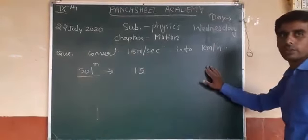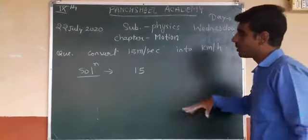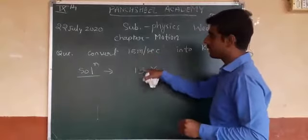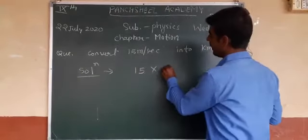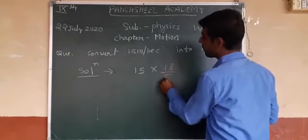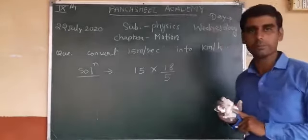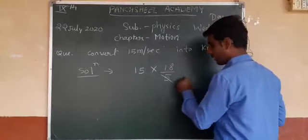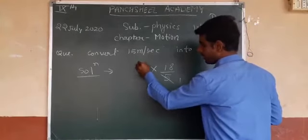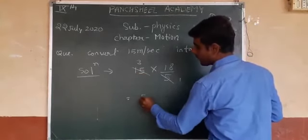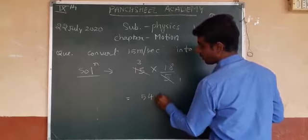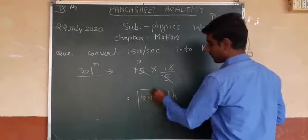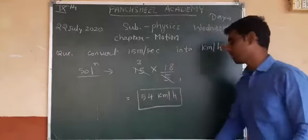So you must multiply 15 by 18/5. Simplifying: 15 multiplied by 18/5 — cancel 5 into 15, giving 3, then 3 multiplied by 18 gives 54. So you directly get 54 kilometer per hour.